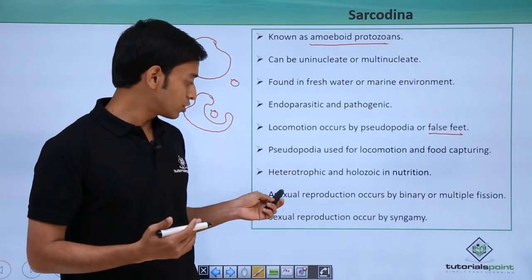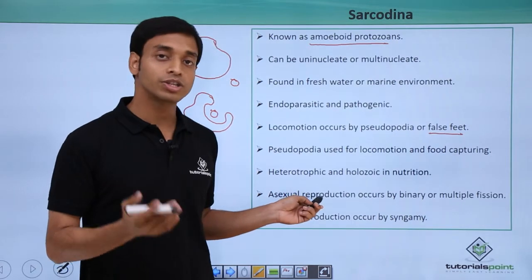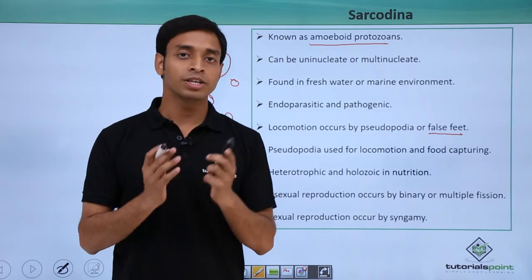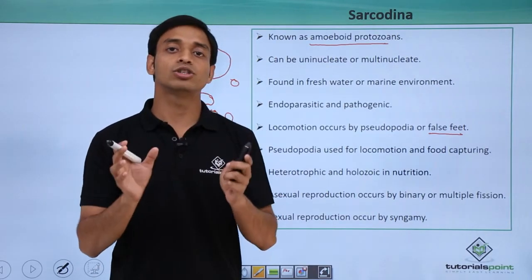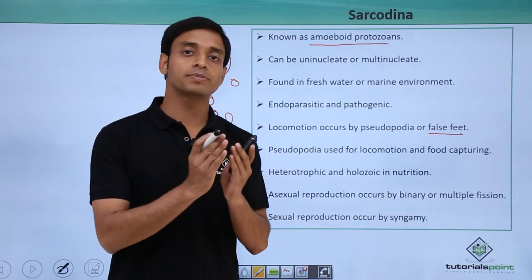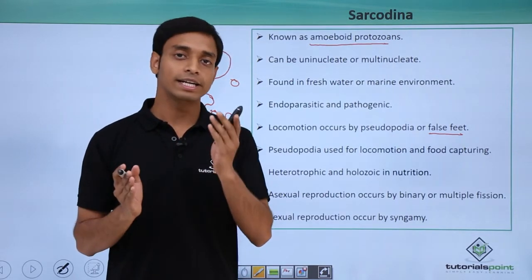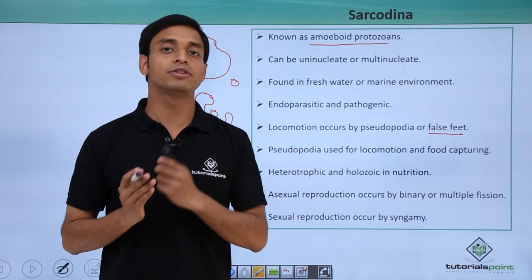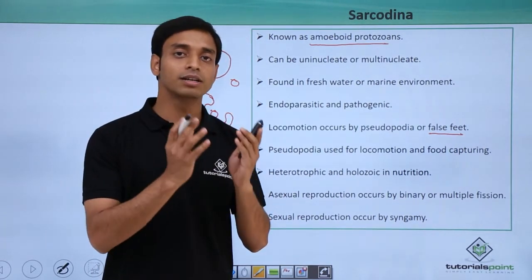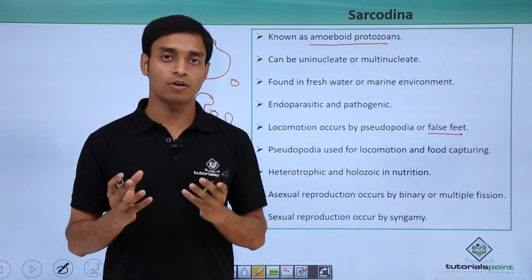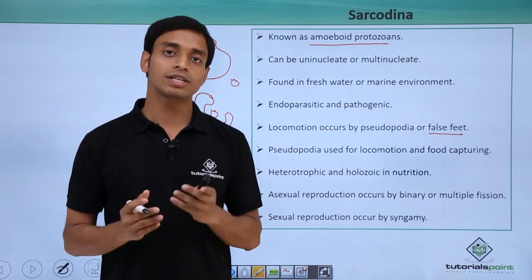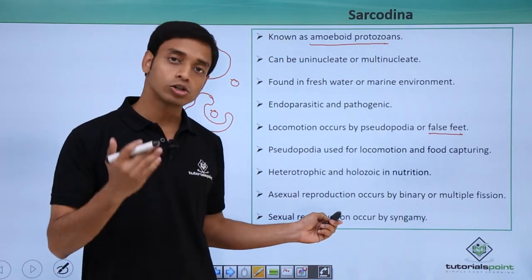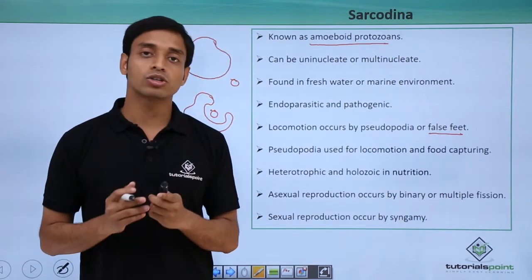The mode of reproduction is mostly asexual, which can happen by binary fission or multiple fission. In binary fission, the parent cell equally divides into two daughter cells and the cytoplasmic content is equally divided. In multiple fission, from a single parent numerous cells are formed — more than two. Sexual reproduction can also occur by the process of syngamy.